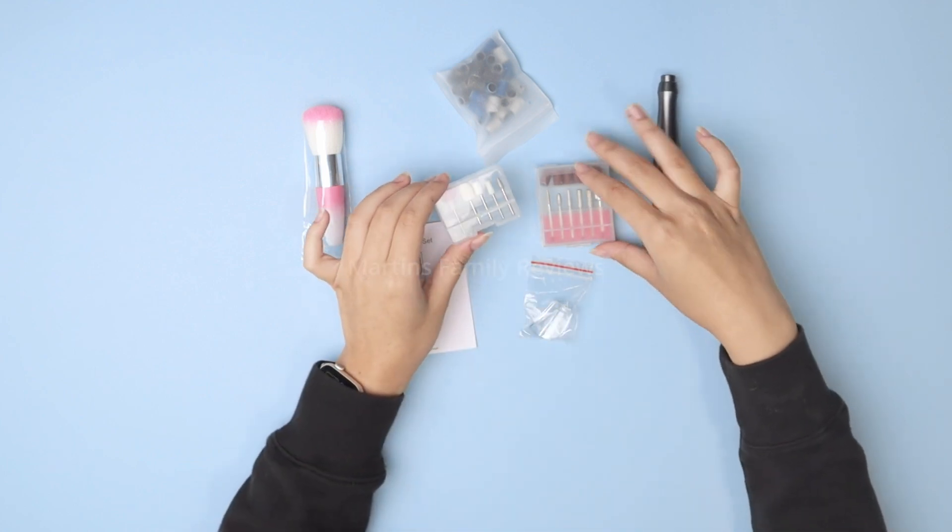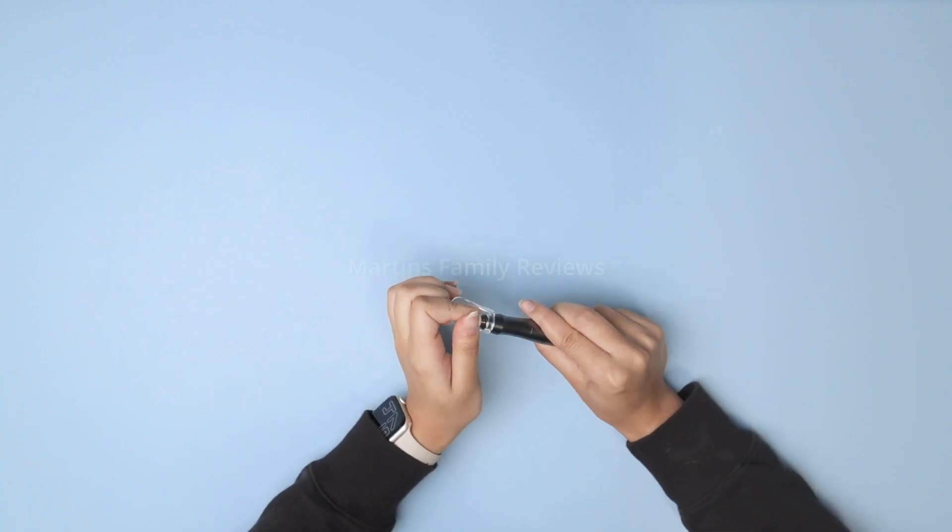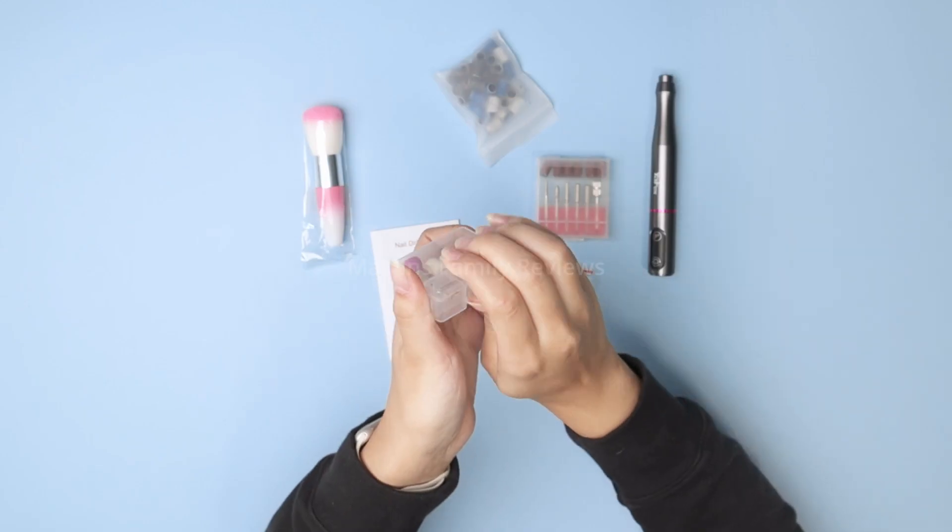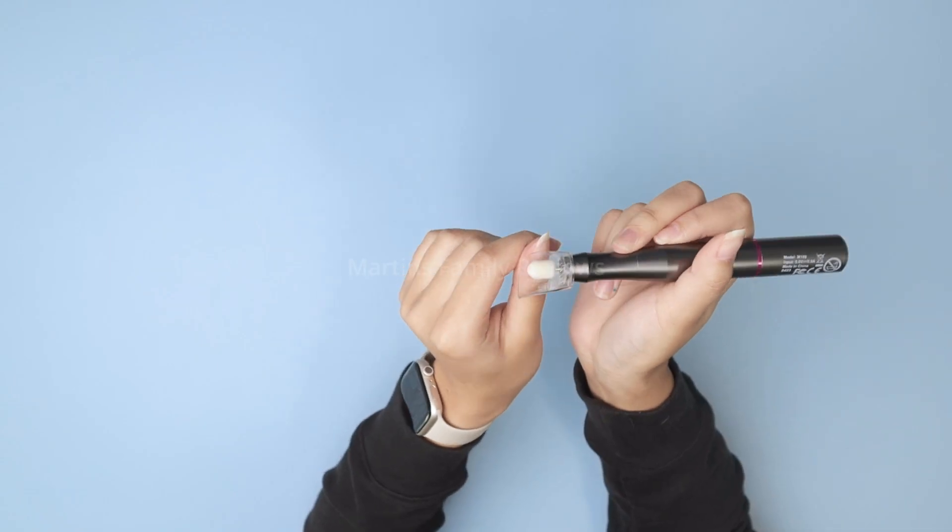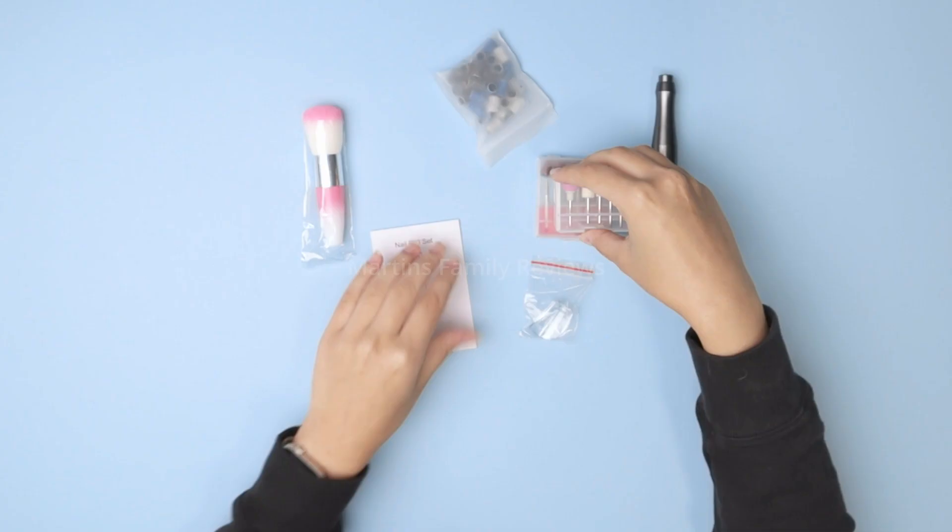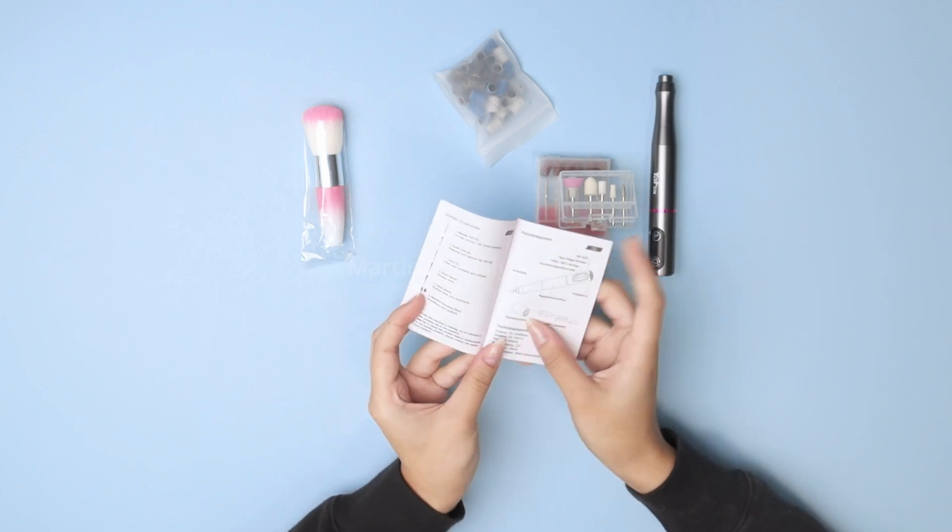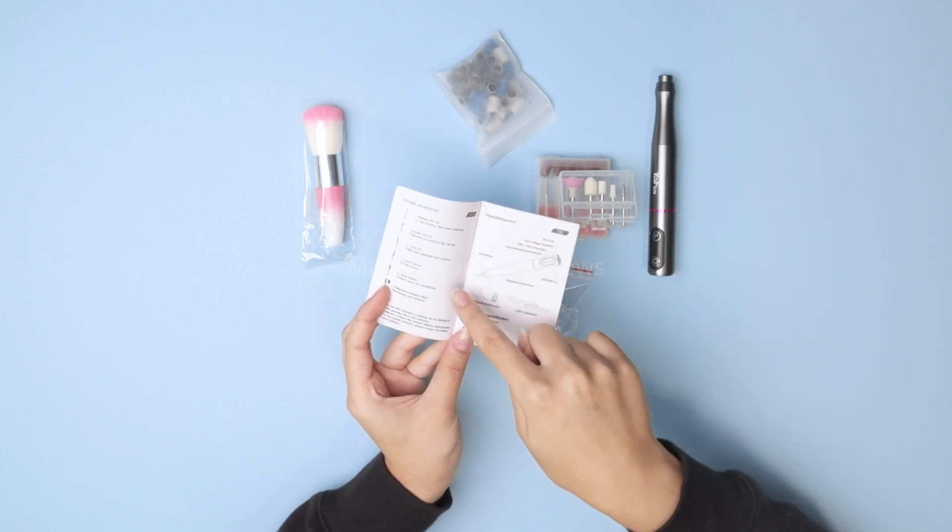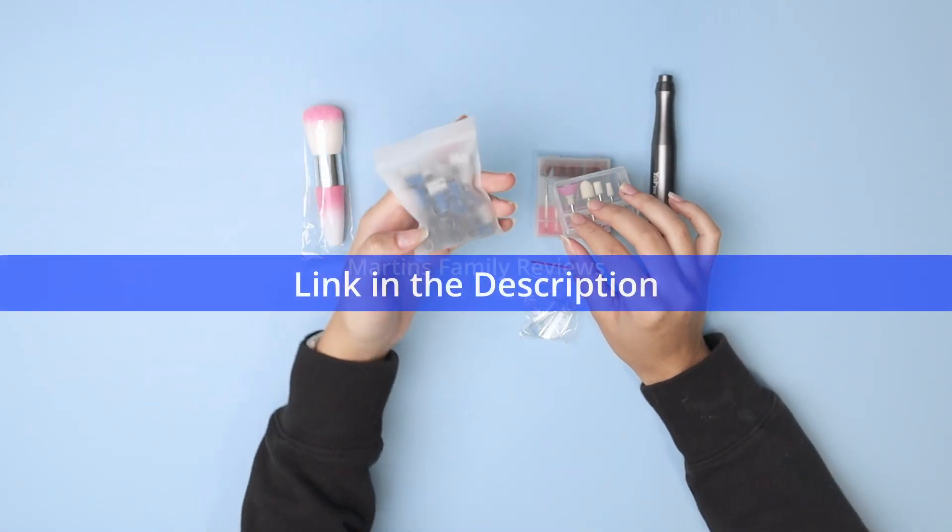You're going to get so many of these drill bits as you can see and they all have different functions. For example, some of them are made to polish your nail or to file your nail and you're going to find out about those in the manual as you can see here where they teach you what everything does for the grinder accessories. So I definitely recommend taking a look at that as well.